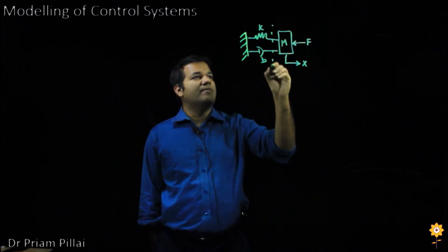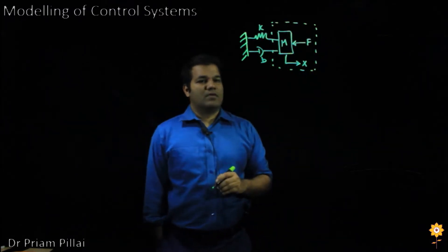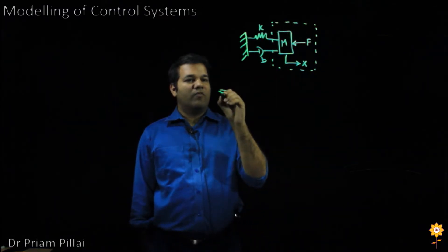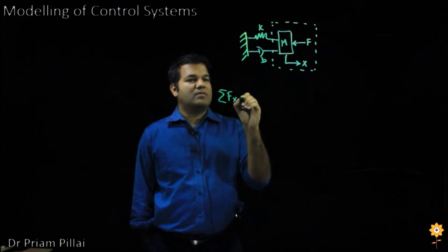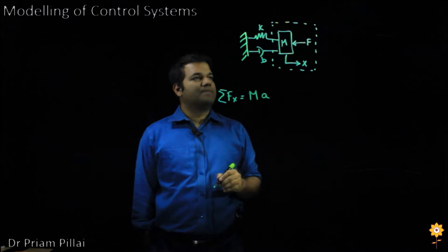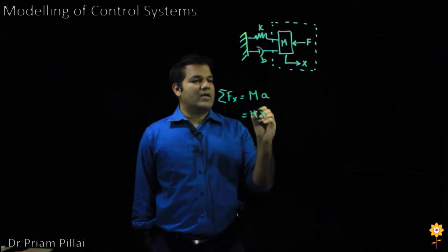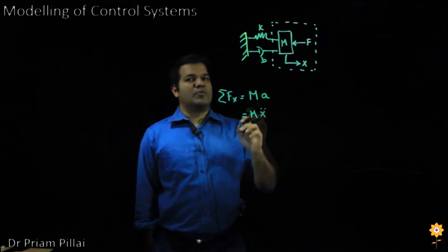So consider this mass m. According to Newton's laws, the sum of all the forces acting on that mass will be given by the mass times its acceleration. And the acceleration is nothing but the second derivative of its position.